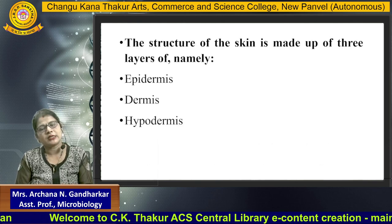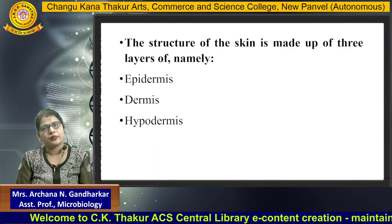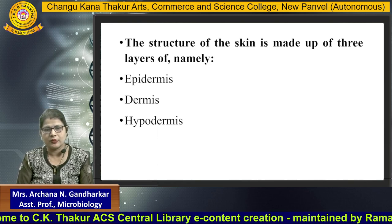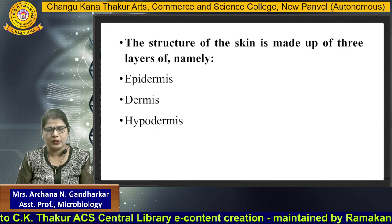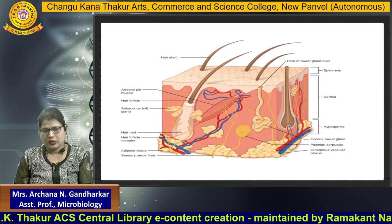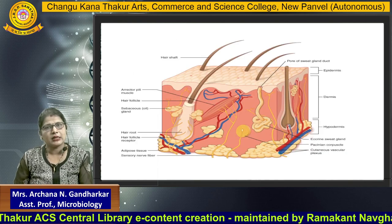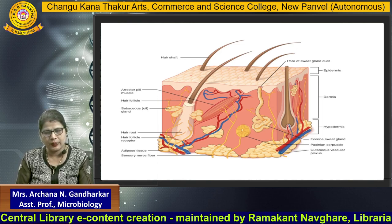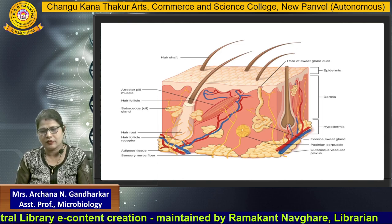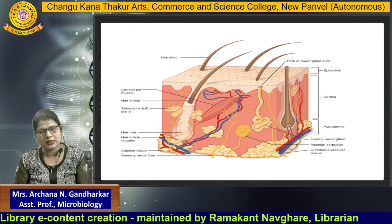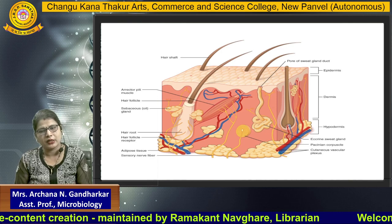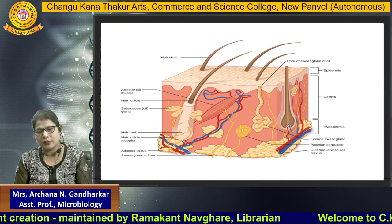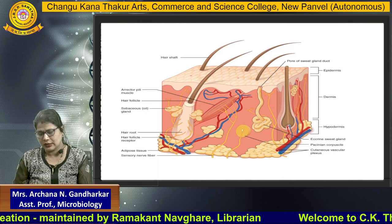The structure of the skin is made up of three layers: epidermis, dermis and hypodermis. The epidermis is the outer layer, dermis is the middle layer, and hypodermis is the internal layer.